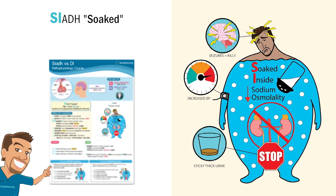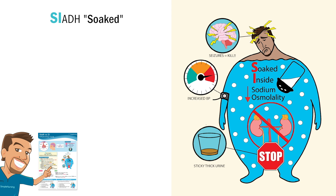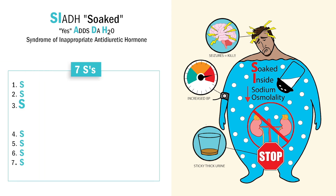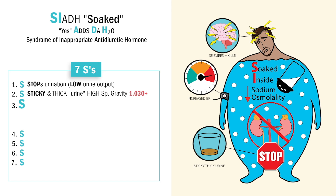Let's break these down one by one. For SIADH, think 'sí' for Spanish, which means yes — yes ADH, yes add the H2O, so the body gets really soaked with fluid. Use our memory trick, the seven S's for SIADH. Our first S is for stop urinating — we get low urine output, and this means sticky, stinky, and thick urine. This means keyword high urine specific gravity over 1.030, meaning we've stopped urinating, so whatever does come out is thick like paste.